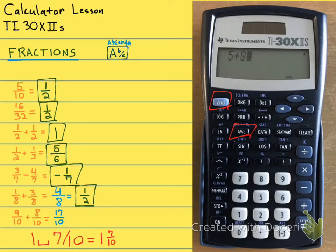And what it says, it says ANS. It's taking your answer, and it's doing the ABC to D over E. ANS means taking your previous answer. Hit equals, and you'll see 17 over 10.